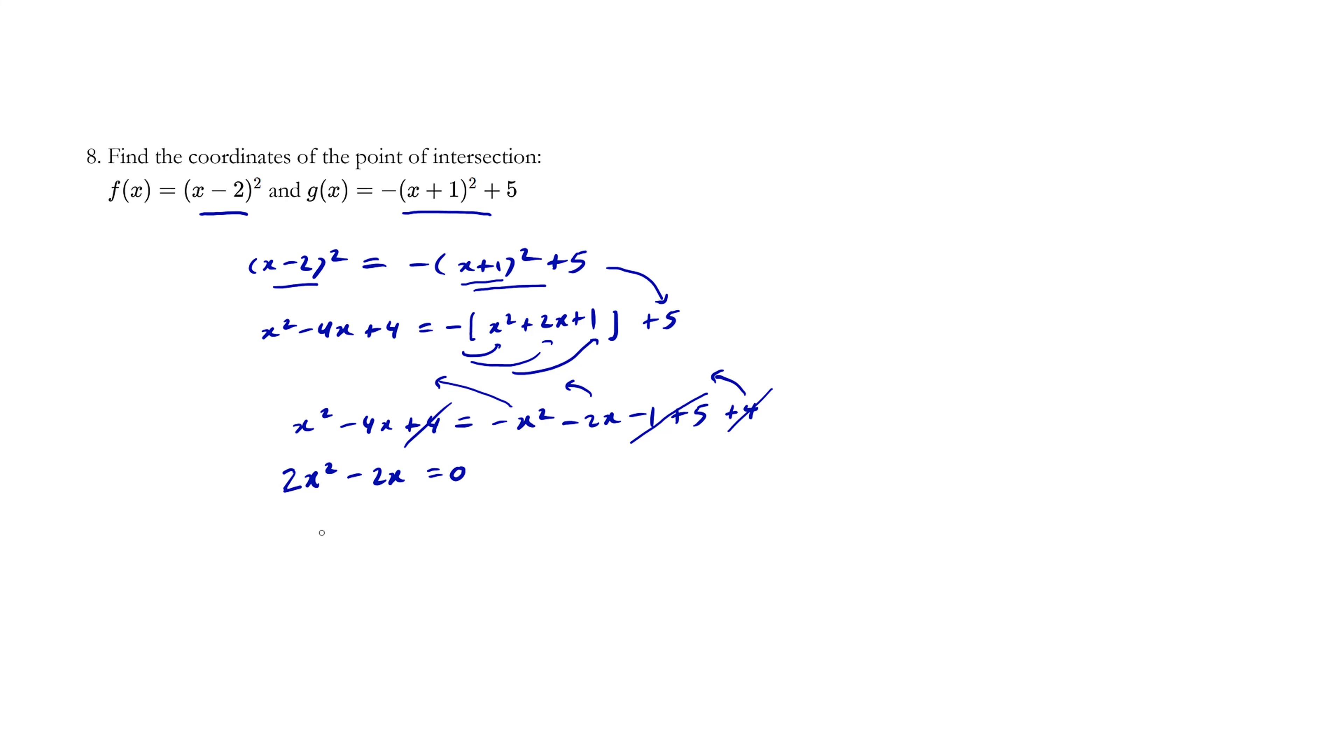And so now we're just going to factor. We're going to factor out a 2x. So if you ever get a statement, by the way, something like 2x squared equals 2x, please do not divide by x. You might lose the answer x equals 0. You lose answers. It's better to move things over and factor. It's a very important fact.